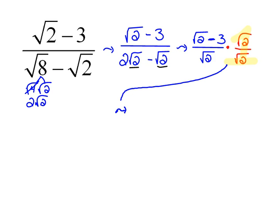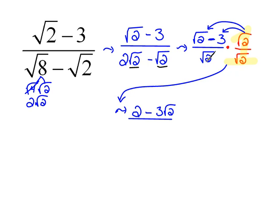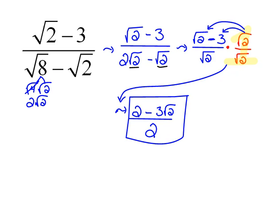So, in order to get rid of this square root of 2 on the bottom, we would have to multiply by the square root of 2, top and bottom. Remember, we can do that because that's a 1. So now, we would multiply the square root of 2 throughout the numerator. The square root of 2 times the square root of 2 is the square root of 4, which is 2. Minus the square root of 2 times 3 would be 3 square roots of 2. All over — on the bottom, the square root of 2 times the square root of 2 is the square root of 4, which is 2. This is our fully simplified answer. It just depends on how you see it.